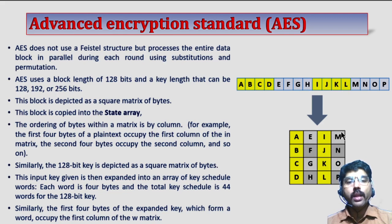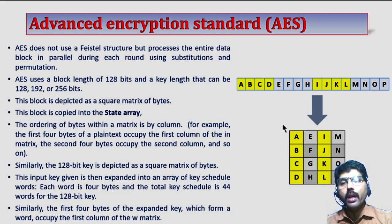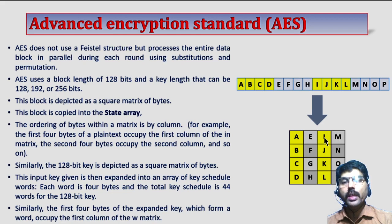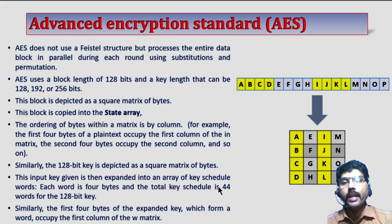In one key we have totally 4 words, and each word is 4 bytes. Each key has 4 words and each word size is 4 bytes. We have to expand our array of key schedule. This input key is then expanded into an array of key schedule words. Each word is 4 bytes and the total key schedule is 44 words for 128 bits. That means I have to create totally 11 keys, and each of the 11 keys is actually 4 words, so I need totally 44 key schedule words.